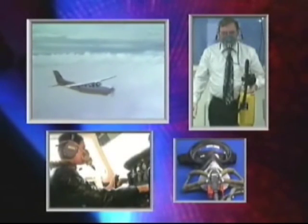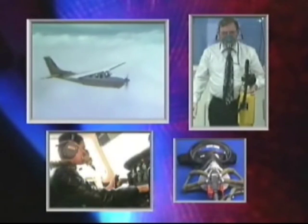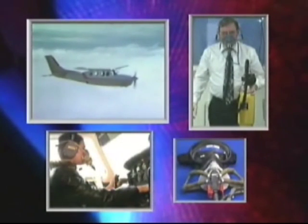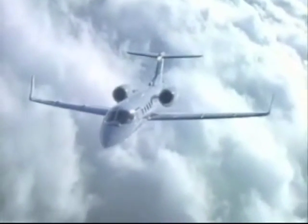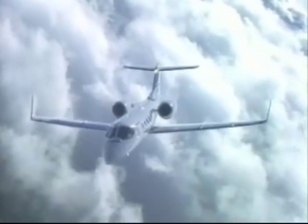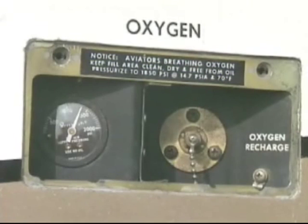The aviation industry has designed and manufactured widely diverse types of oxygen equipment for general aviation aircraft. Pilots who routinely fly at altitudes above 10,000 feet mean sea level commonly use a fixed oxygen system. Fixed systems are normally serviced through an exterior fuselage valve. The major advantage of a fixed oxygen system is greater oxygen storage capacity.